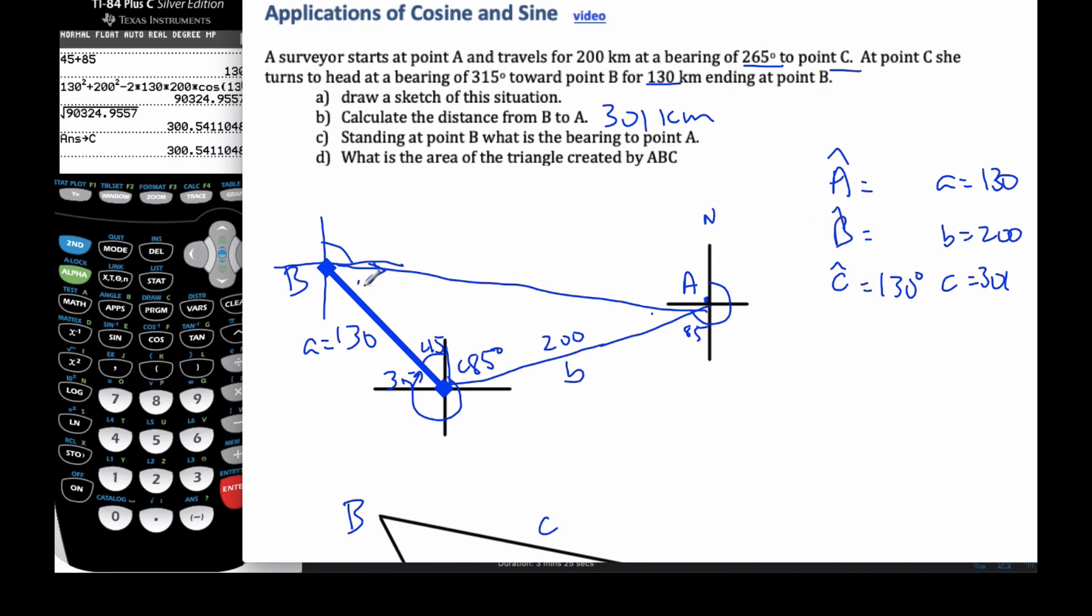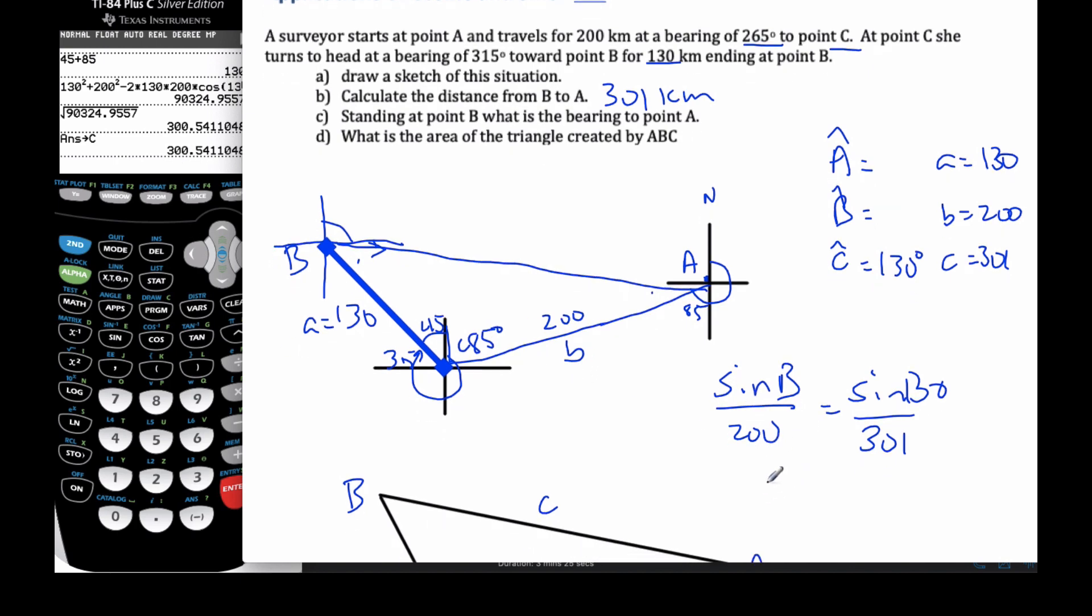So let's just do angle B since I'm on this end. And so I can say the sine of B, which is unknown, over 200, sine B over b, is equal to the sine of 130 over 301. Now, I'm not actually going to use 301, I'm going to use this 300.54.